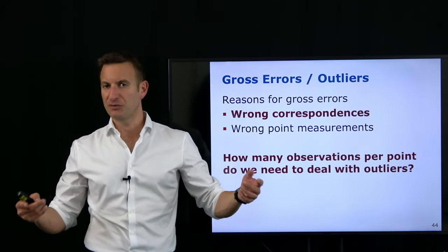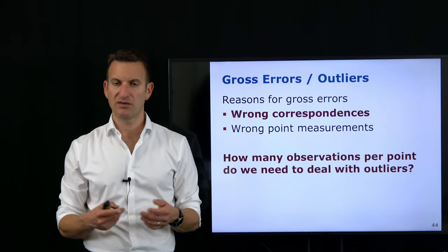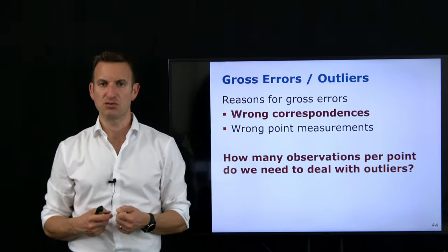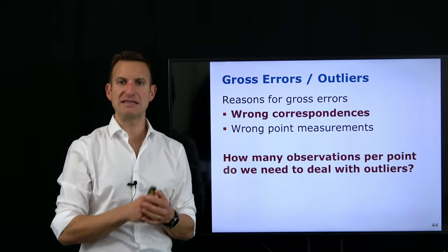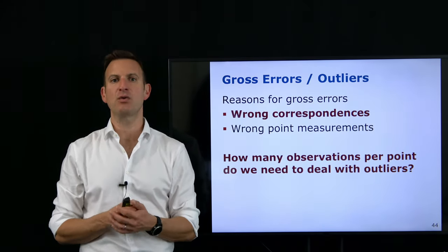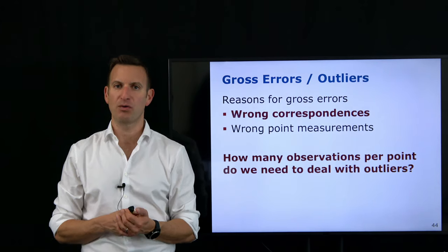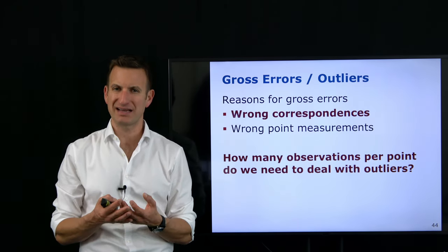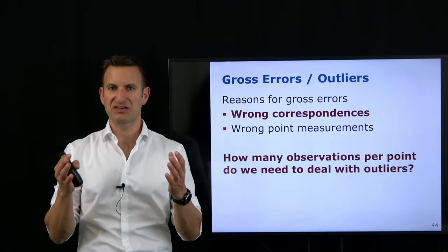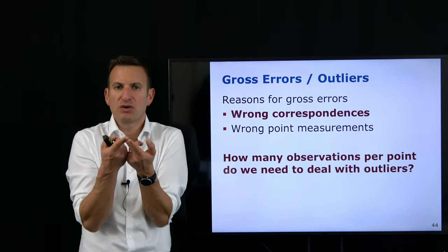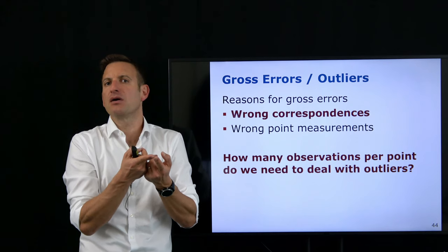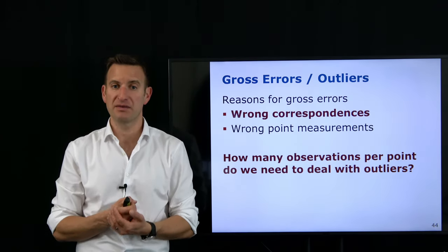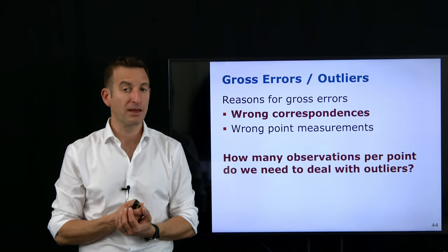With three observations of the same point, I can take all pairs — images one and two, two and three, one and three — and perform triangulation for each pair. If outlier-free, all intersection points should be at more or less the same location. If they are spread over the place, one observation was wrong, but I typically cannot tell which one. With four observations I can repeat the same process and actually identify which observation contains the outlier.